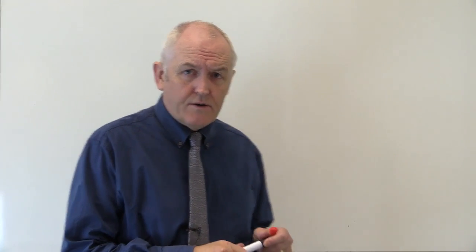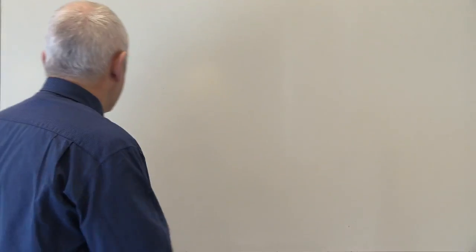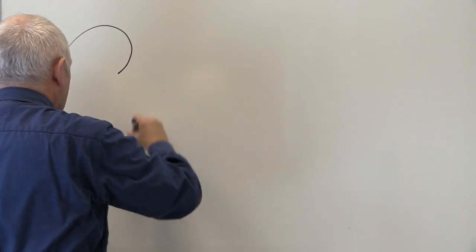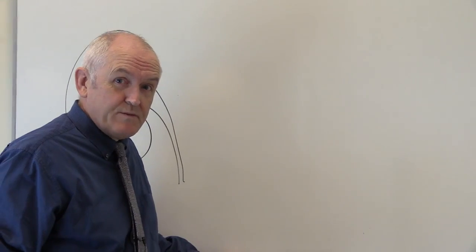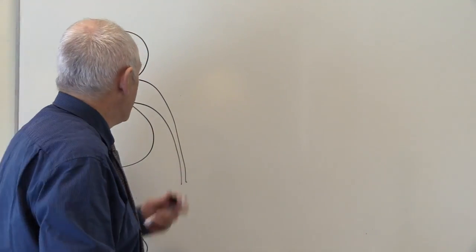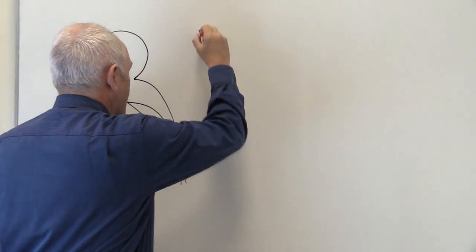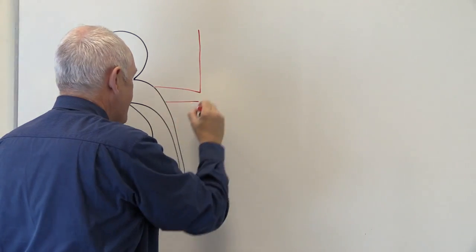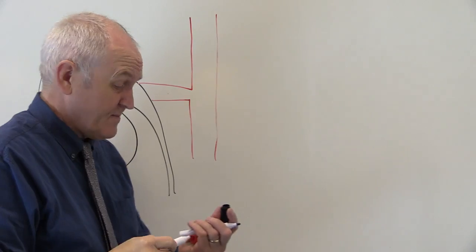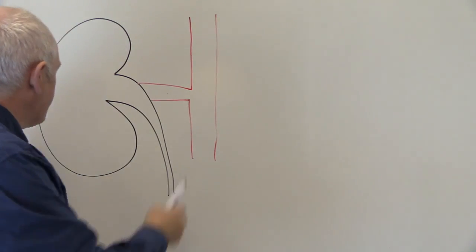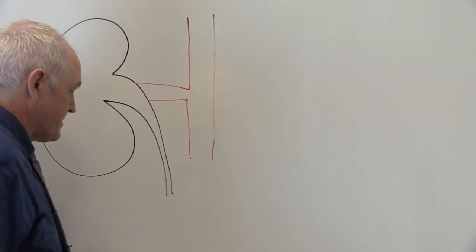One of the functions of the kidney is it regulates systemic blood pressure. Here we have a kidney and it's essential that the kidney is well perfused with blood. We have the aorta and the renal artery is a branch from the aorta, and the kidney needs to make sure it's well perfused with blood.